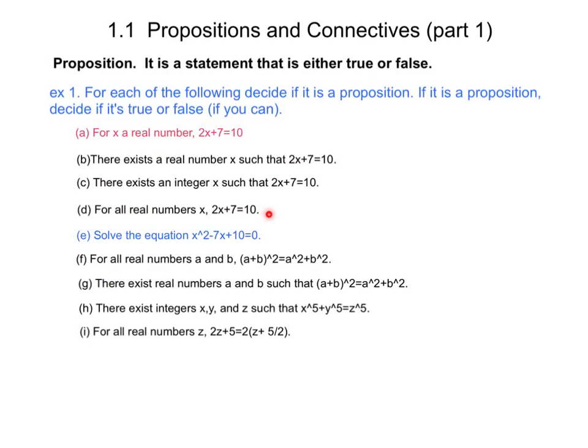D is a proposition but it's a false proposition because it's not the case that every real number x satisfies 2x plus 7 is 10. In order to prove this we would need to produce what's known as a counterexample.